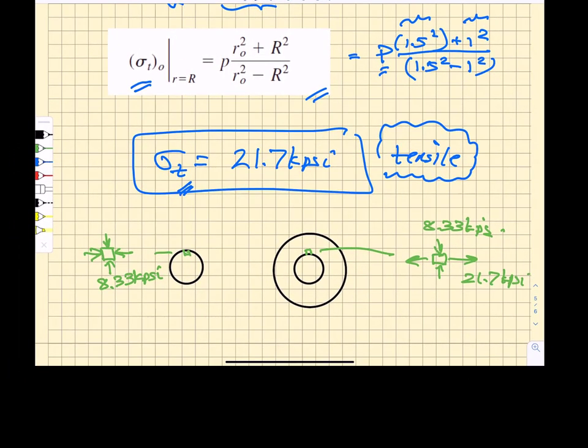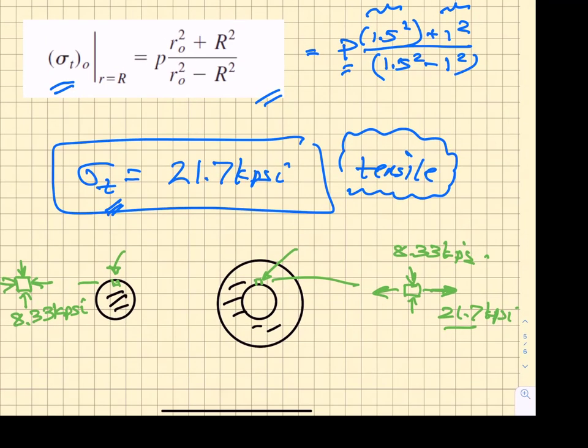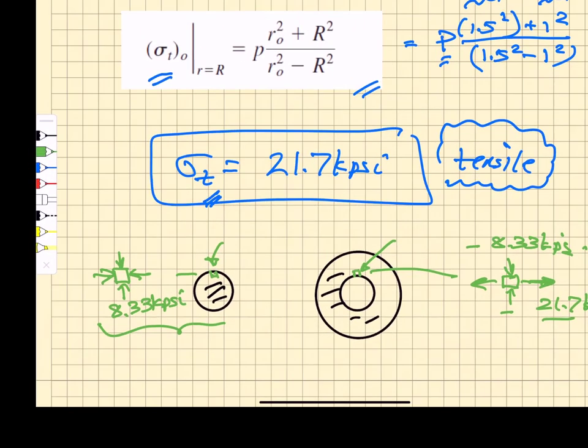So if we were to look at shaft and the collar and we were to remove a little materials element from the shaft at the outer boundary and from the collar at the inner boundary at that nominal interface we could look at the stress state that's developed. We're going to ignore the stress coming out of the page but we have in the plane of the collar we have a tensile hoop stress of 21.7 kpsi and a radial compressive stress of 8.33 kpsi. On the shaft we end up with a hydrostatic stress state of 8.33 kpsi.